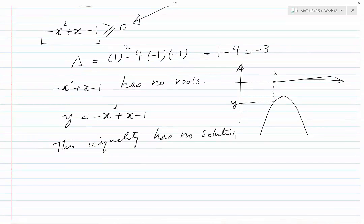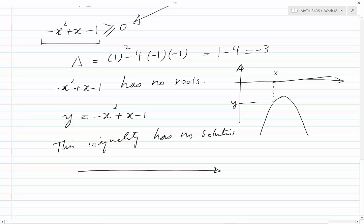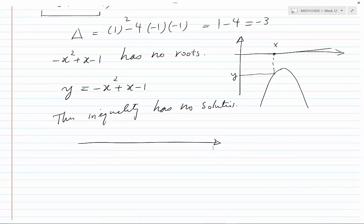We can show this answer on the real line by leaving it empty. Using interval notation, we indicate that there are no solutions by writing the empty set.